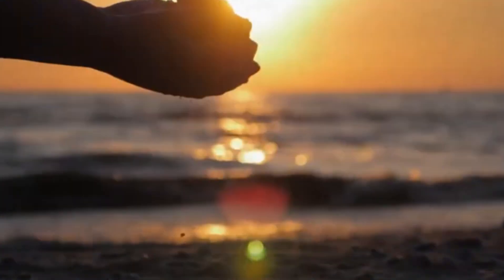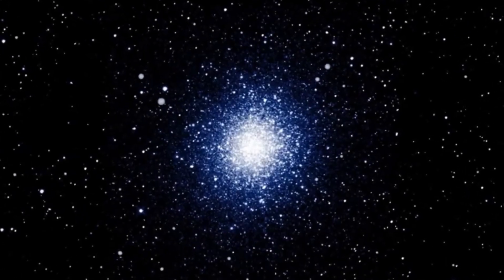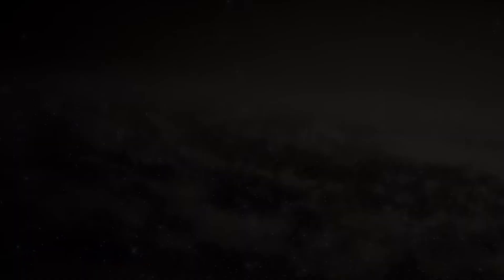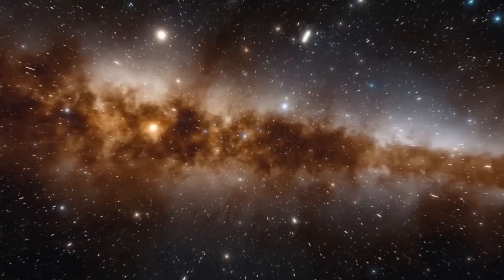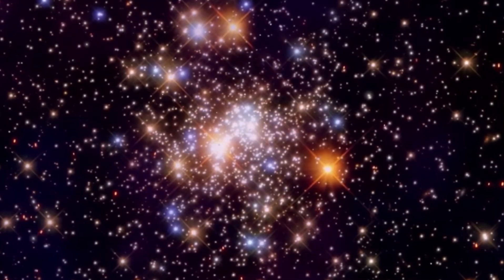If one were to transplant Betelgeuse into the position of our sun, its expansive reach would extend out to the orbit of Jupiter, dwarfing our solar system's familiar configuration. However, this red giant is not merely a luminous spectacle. It carries an air of instability.